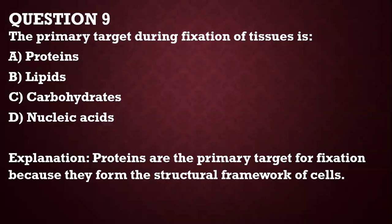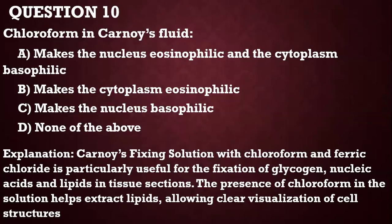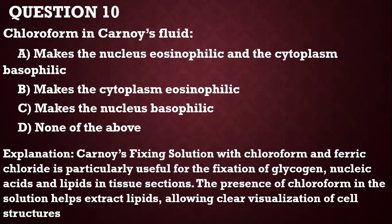Question number 9: the primary target during fixation of tissue is usually protein, because proteins form the structural framework for cells — that's what fixatives target. Question 10: the role of chloroform in carnoid fluid. The answer is none of the above, because chloroform's role in that particular solution is to fix glycogen, nucleic acids, and lipids in tissue sections. The presence of chloroform also helps to extract lipids, which allows clear visualization of cell structures.